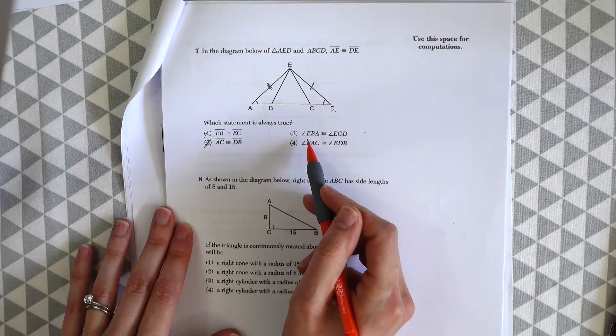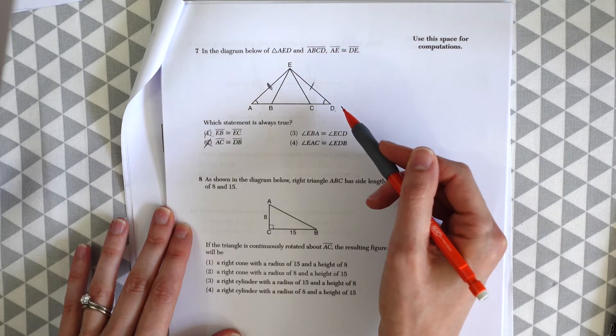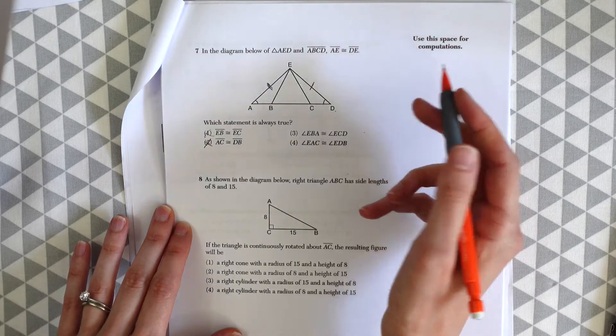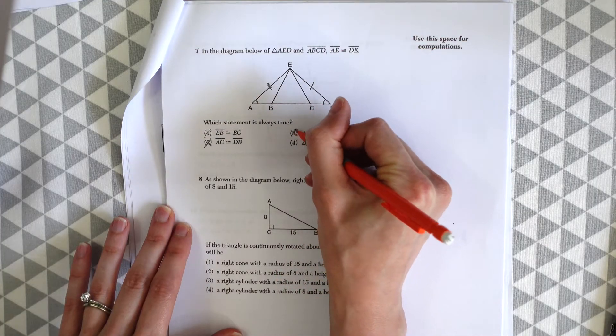And then we have choice three, angle EBA is congruent to angle ECD. Again that looks right, but we're not 100% sure. So that doesn't give us what we're looking for, those two angles to be congruent. So that's not it either.